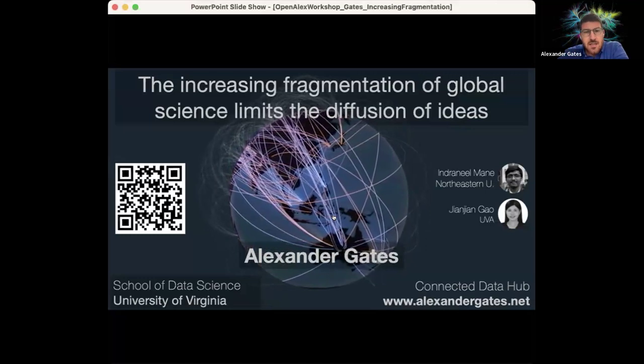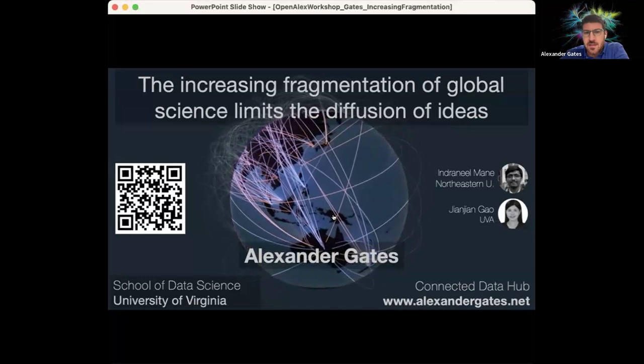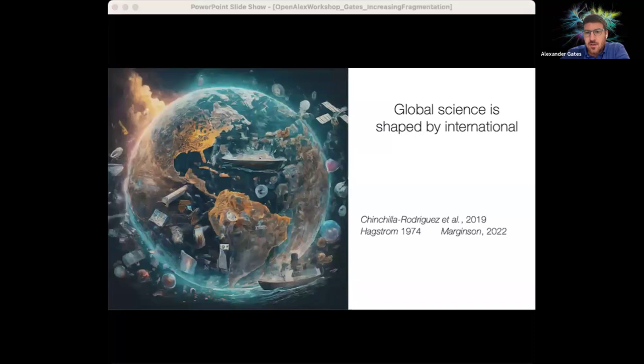This is work done with two amazing collaborators, Indra Nomein and Jianjian Dao, who I think is in the participant list here today and can help answer some of the questions. So global science, the global scientific ecosystem is shaped by the emergent interplay between international collaboration and competition.